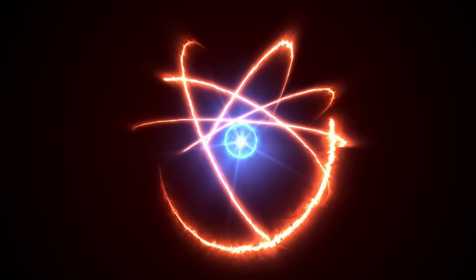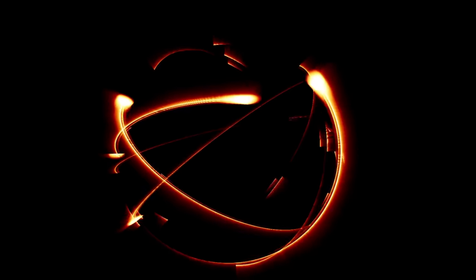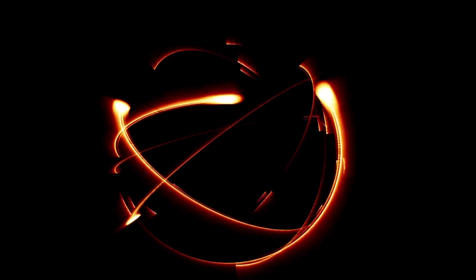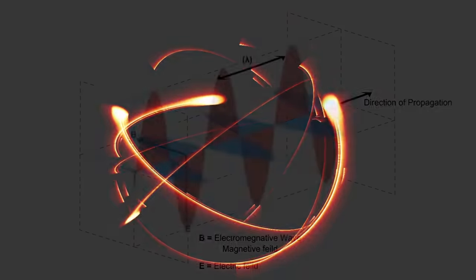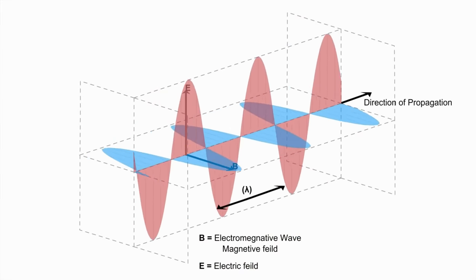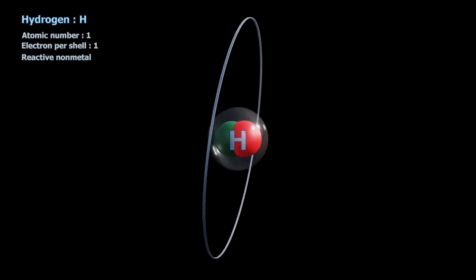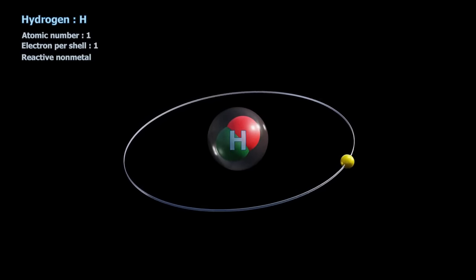But there is a problem. An orbit is a state of constant acceleration, and an accelerating electron will radiate energy according to the theory of electromagnetism, and the electron emitting energy will spiral towards the nucleus.